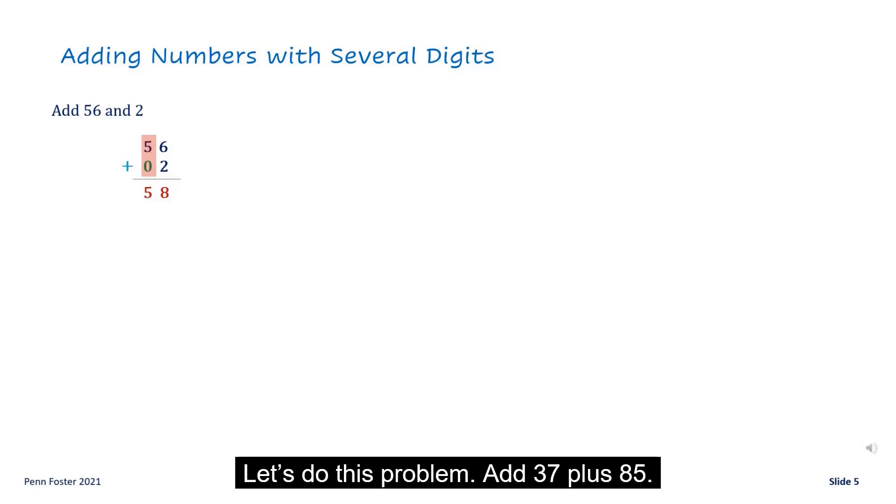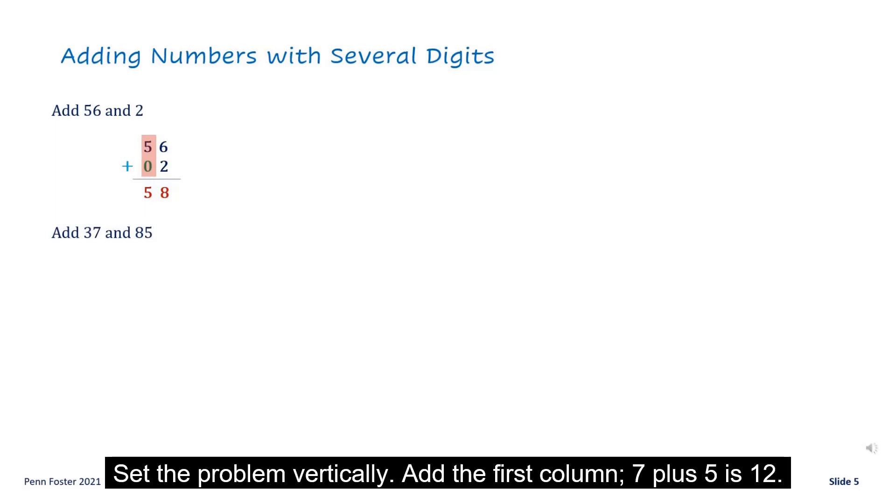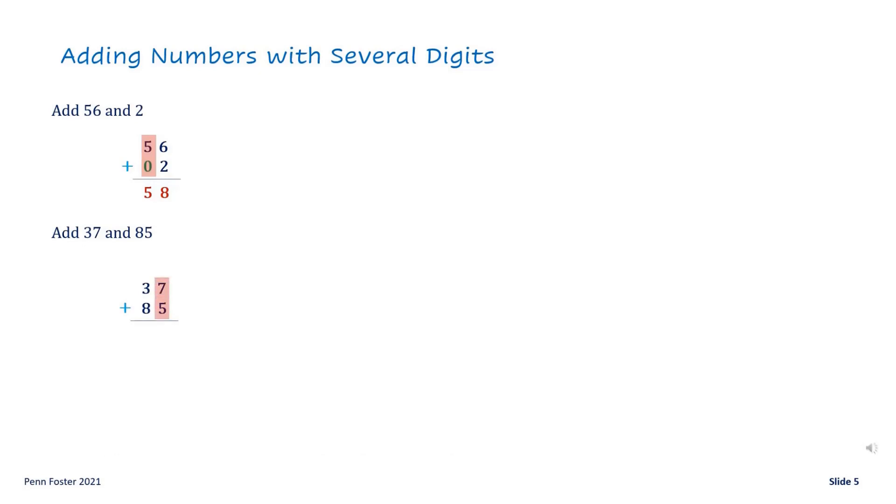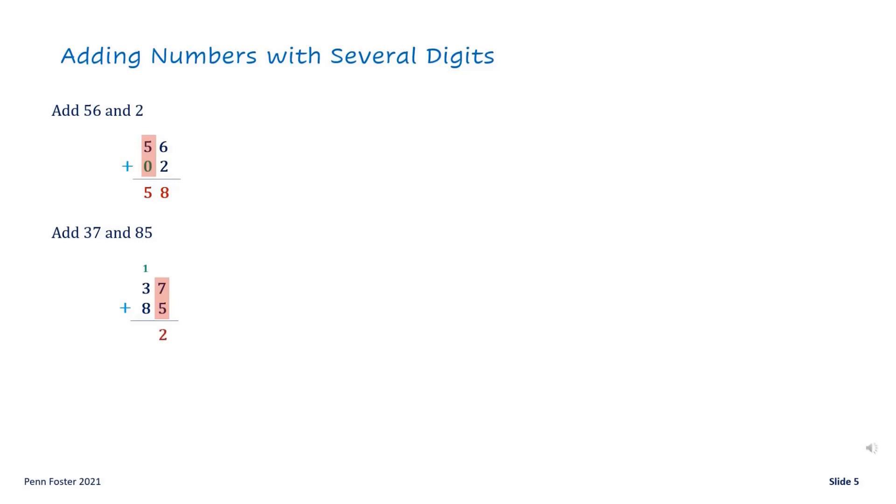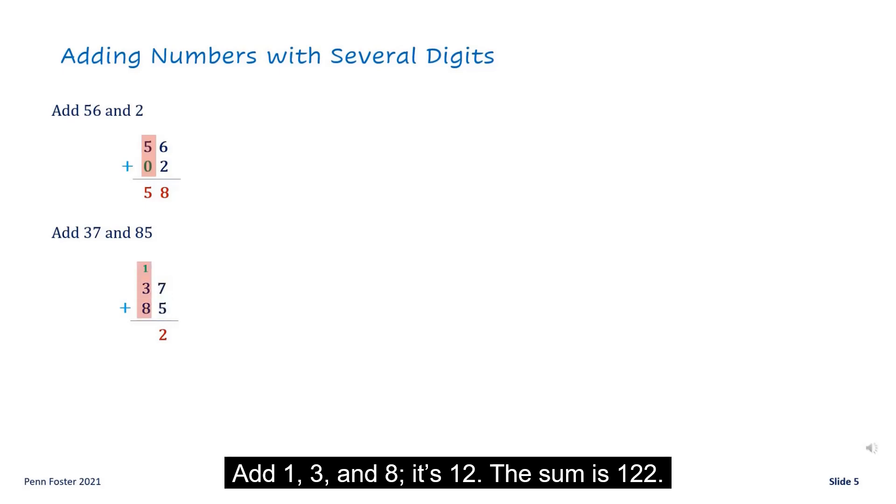Let's do this problem: add 37 plus 85. Setup the problem vertically. Add the first column. Seven plus five is twelve. Write down two below the line, then carry one over the second column. Add one, three, and eight. It's twelve. The sum is one hundred twenty-two.